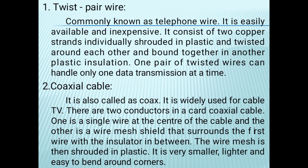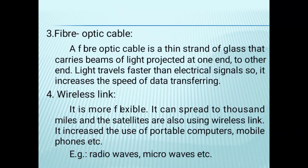Coaxial cable, also called coax, is widely used for cable TV. There are two conductors in a coaxial cable: one is a single wire at the center of the cable, and the other is a wire mesh shield that surrounds the first wire with a wireless insulator in between. The wire mesh is then sheathed in plastic. It is very small, light, and easy to bend around corners.